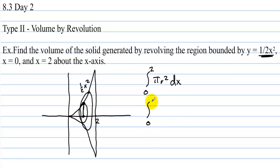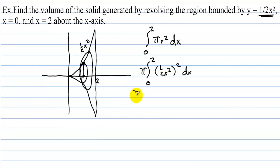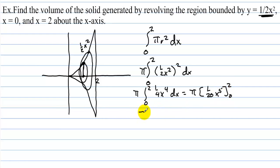Now let's plug that in for r. We have the integral from 0 to 2, pulling the constant pi out front, of one half x squared squared dx. That gives us pi times the integral from 0 to 2 of one fourth x to the fourth dx, which equals pi times one twentieth x to the fifth from 0 to 2. We get pi times 32 over 20 minus 0, which reduces to 16 over 10 pi, and then to 8 pi over 5.